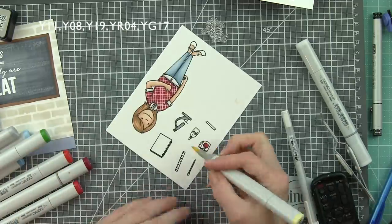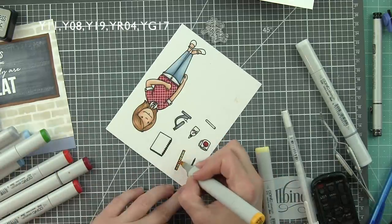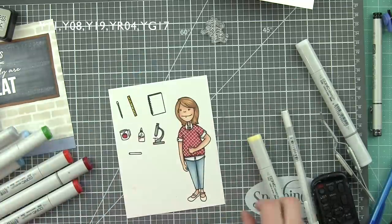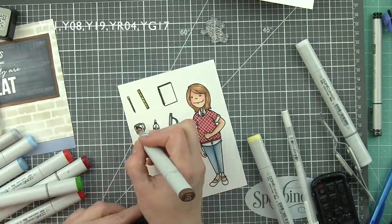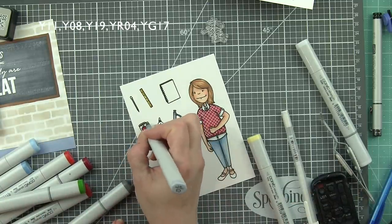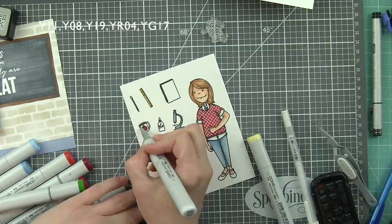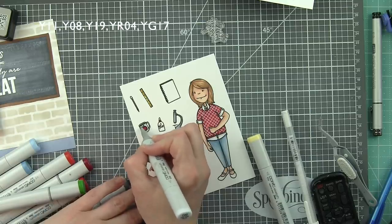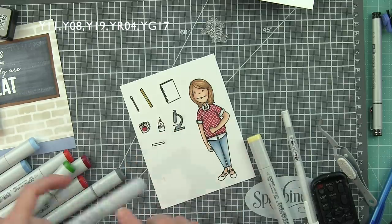Some cool grays for the coffee mug will be used, the glue bottle. The ruler's got some great yellows. The apple is the same colors of red that we used on the sweater. A little green for the stem. The tip of the glue bottle will be some orange.